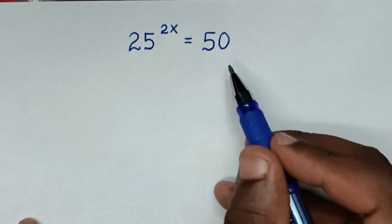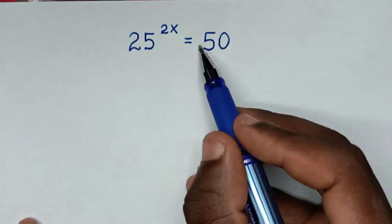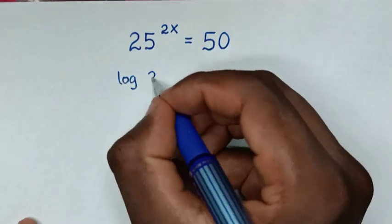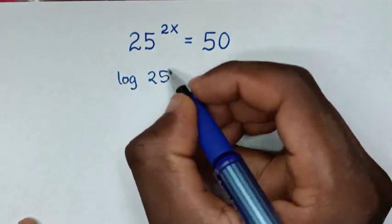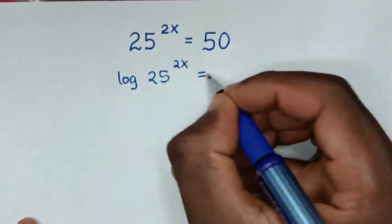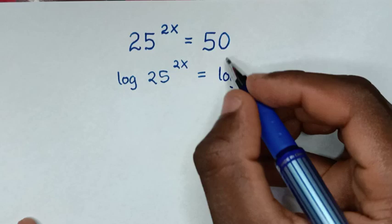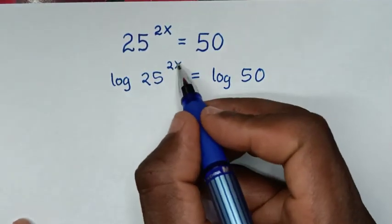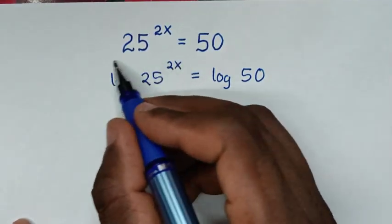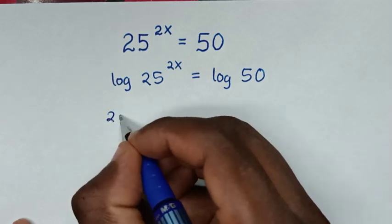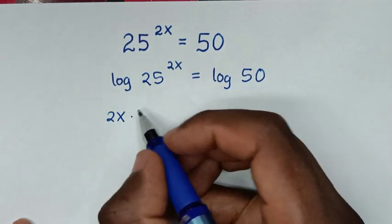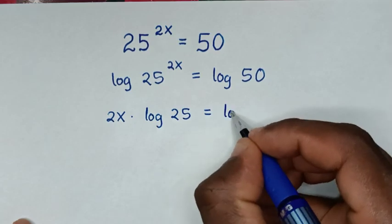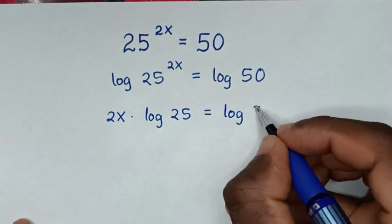In the first step we'll apply log to both sides. So it will be log of 25 to the power of 2x is equal to log of 50. Then in the next step this power of 2x will move down, so it will be 2x times log of 25 is equal to log of 50.